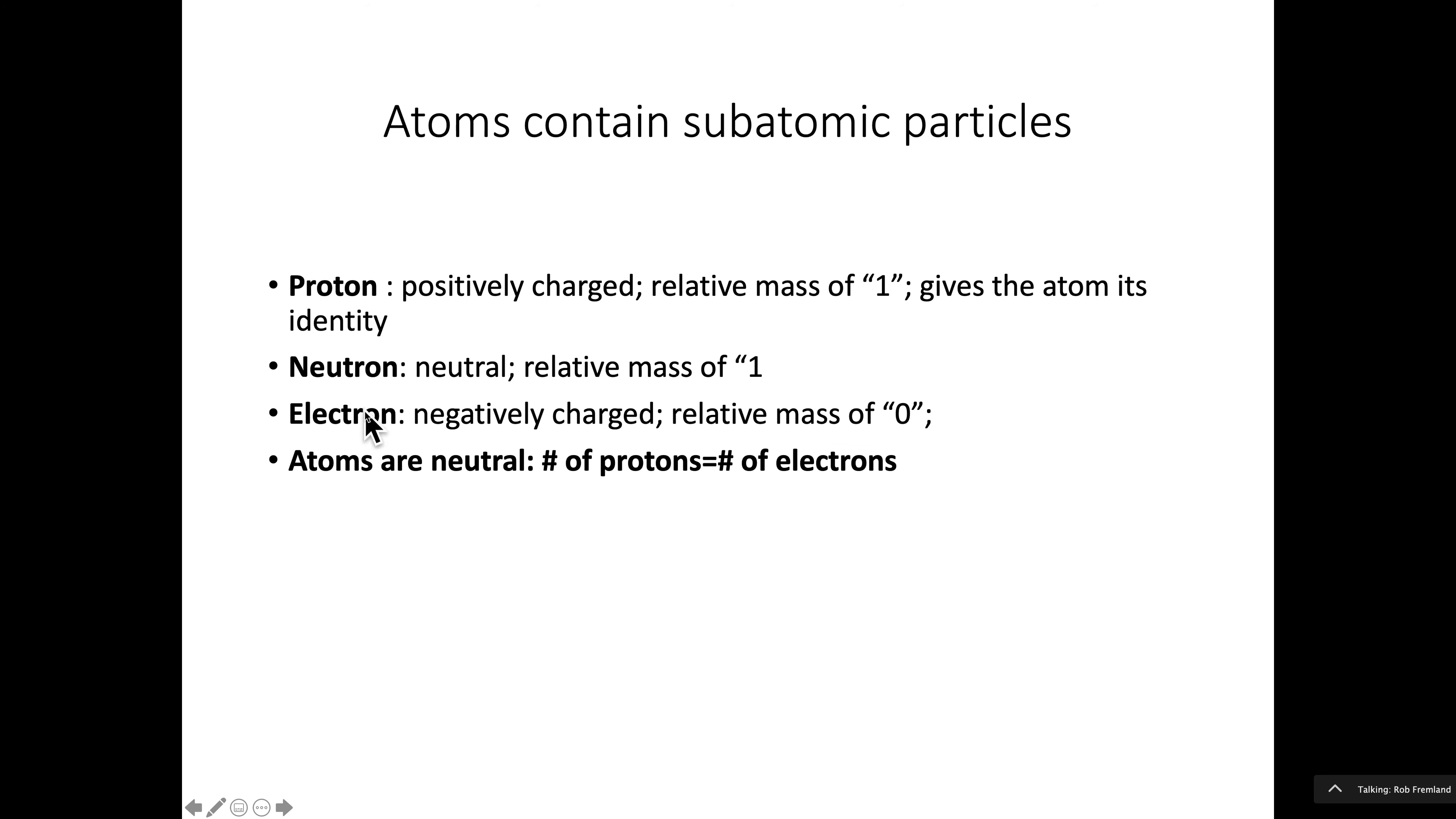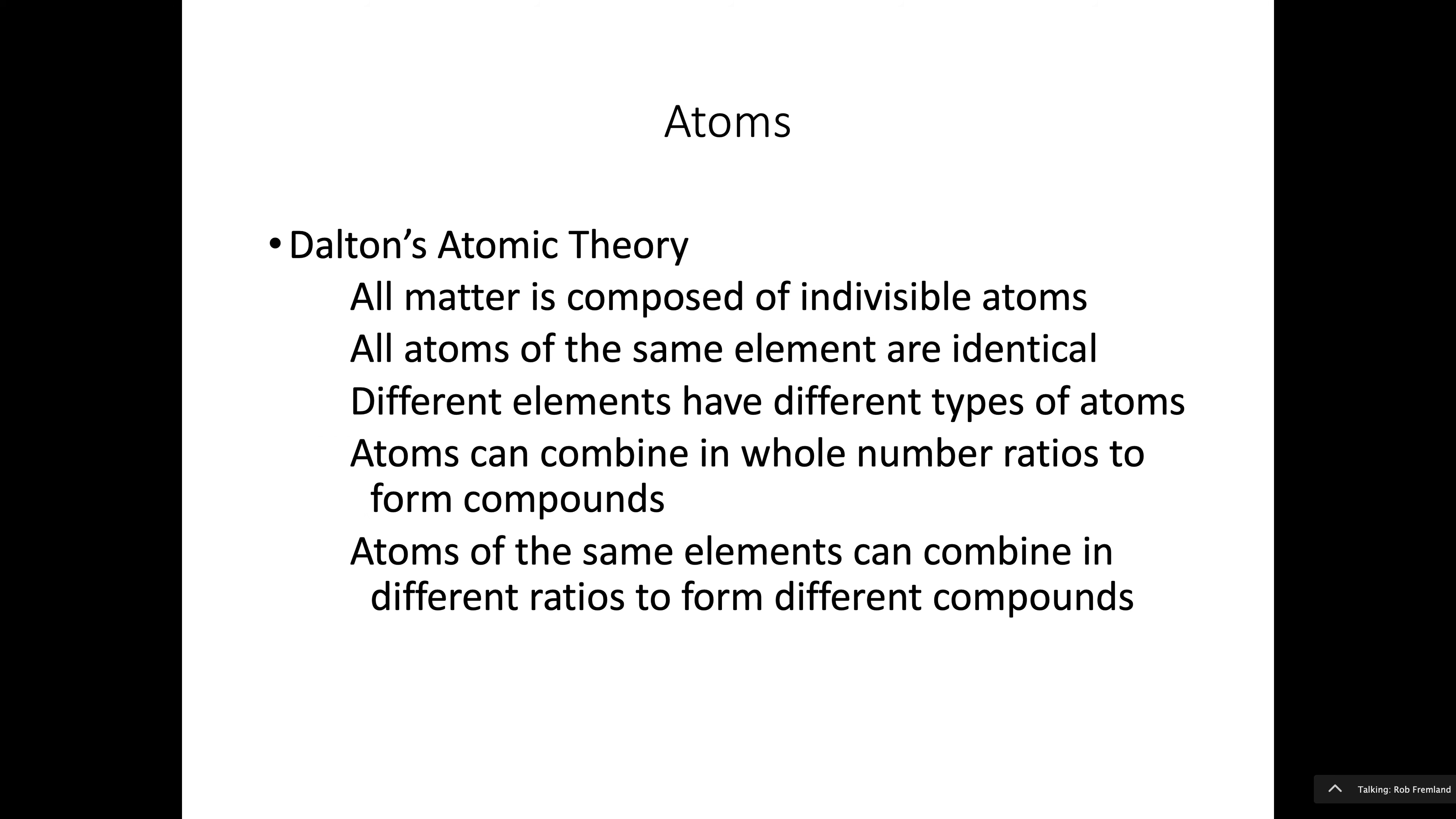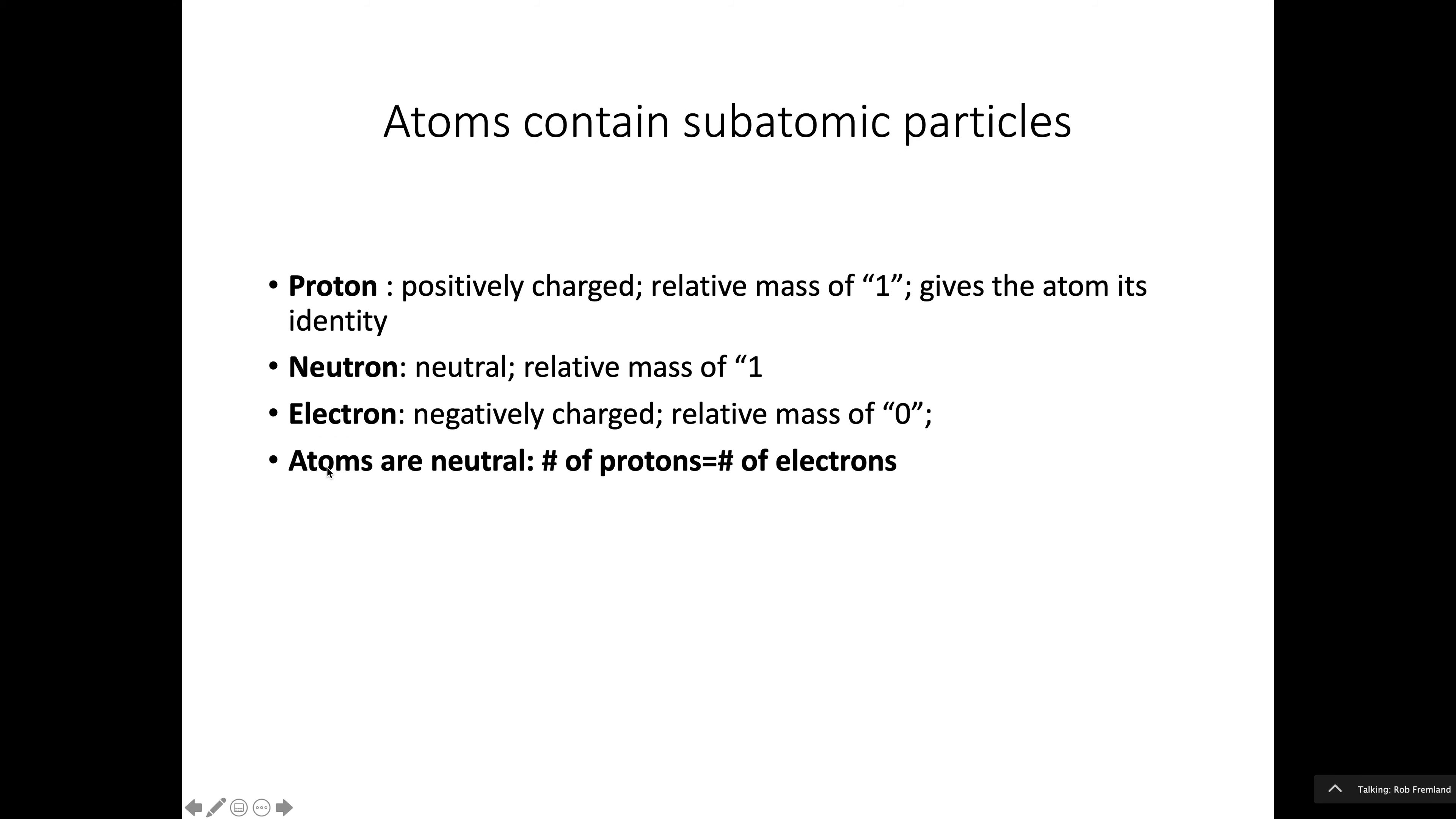And then electrons are negatively charged. They don't really have a relative mass of zero. Their mass is what's called negligible, which means it's so small it doesn't matter. They do have mass, but the mass is extremely small. And because an atom is electrically neutral, the number of protons will always be equal to the number of neutrons.